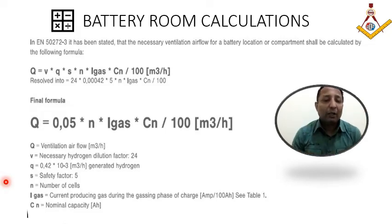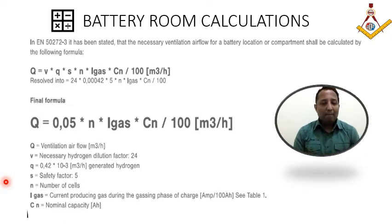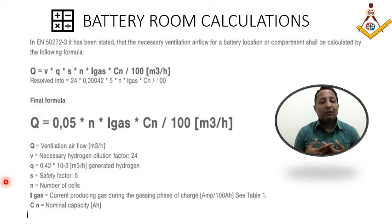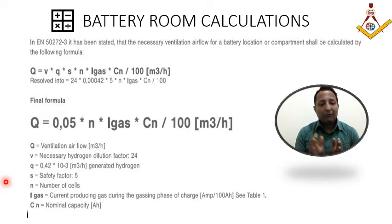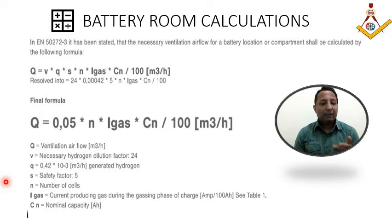If you see this formula carefully, this is the formula applied to calculate the ventilation rate to take out the hazardous gas outside. Additionally, 12 air changes is the standard industrial practice — whichever is higher between the formula result and 12 air changes is taken into consideration while designing the battery room ventilation system.